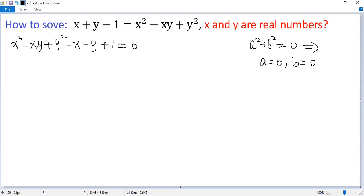Here we have xy, so times two to both sides. So we get two x squared minus two xy plus two y squared minus two x minus two y plus two equals zero.